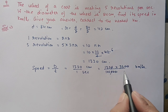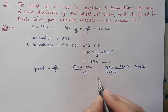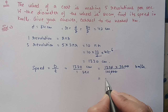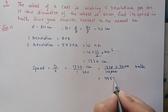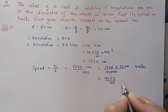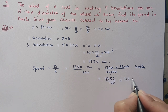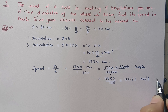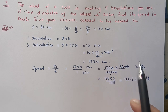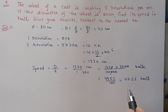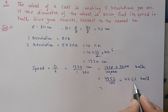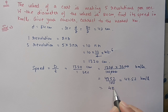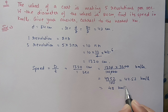After multiplication we get 4752 upon 100, which equals 47.52 kilometers per hour. We have to give the answer correct to the nearest kilometer. Since the digit after the decimal is 5, we round up, giving us 48 kilometers per hour.